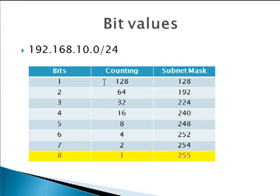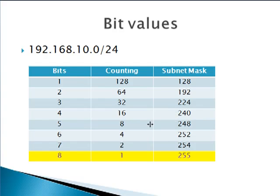If you're decent with binary, you'll notice that these are your binary notations. Starting from right to left, you start with 1, 2, 4, 8, 16. So for your first bit into an octet, you're counting by 128, so your subnet mask is 128. Your next bit, you're counting by 64, so your subnet mask is 128 plus 64, or 192. For three bits in, you're counting by 32 — subnet mask is 192 plus 32, that's 224. 224 plus 16 is 240, plus 8 is 248, plus 4 is 252, plus 2 is 254, plus 1 is 255.